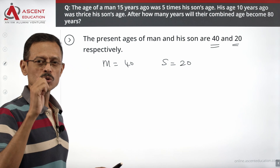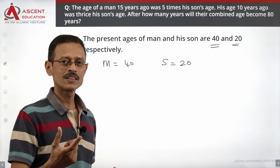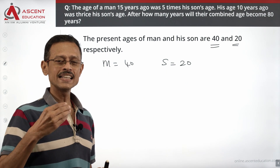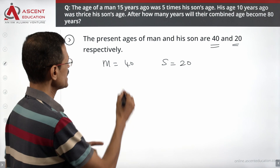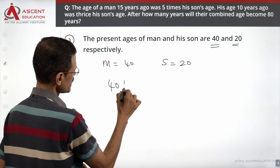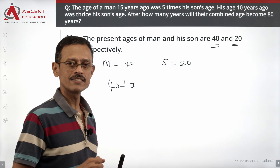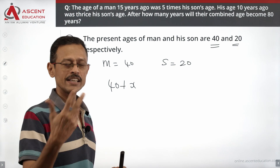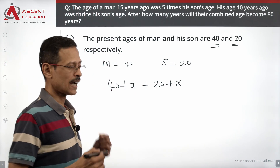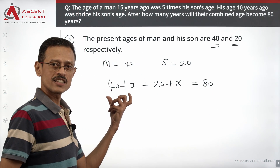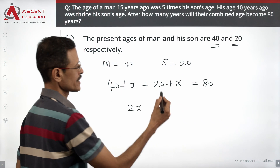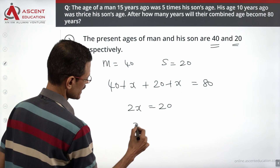Now, if we get x years from now, the man's age would be 40 plus x, and the son's age would be 20 plus x. The age of the man x years from now plus the age of the son x years from now equals 80. So: (40 plus x) plus (20 plus x) equals 80. x plus x equals 2x, and 40 plus 20 is 60. So 80 minus 60 equals 20. Therefore 2x equals 20, and x equals 10.